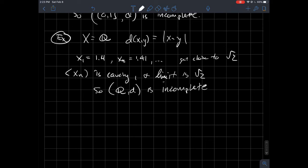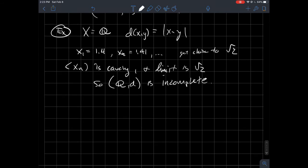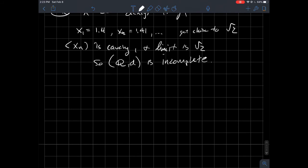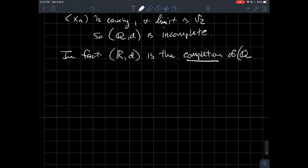And in fact, this is what kind of inspired some mathematicians to try to construct the real numbers. What happens when you complete Q? What if you threw in all the limits of Cauchy sequences of rational numbers? What you get is exactly the real numbers. So in fact, (R, d) is the completion of (Q, d).